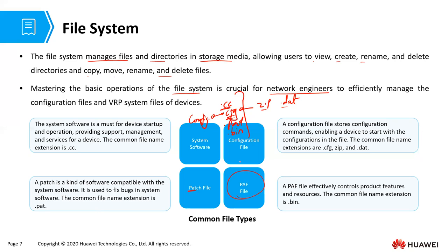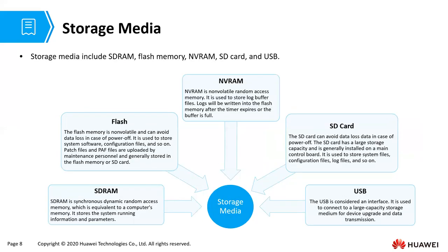All those files need to be stored in some kind of medium. VRP devices support five particular storage types: the SDRAM, the flash memory, the NVRAM, the SD card, and the USB.